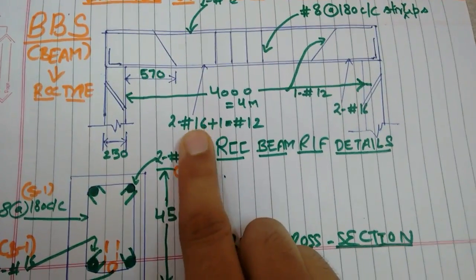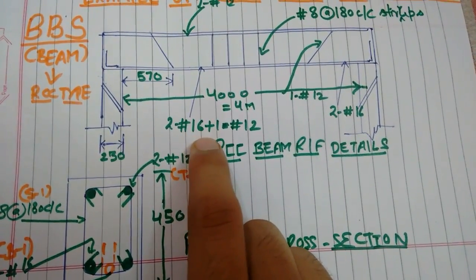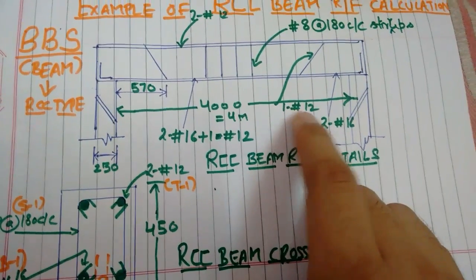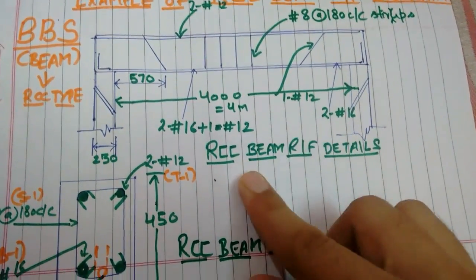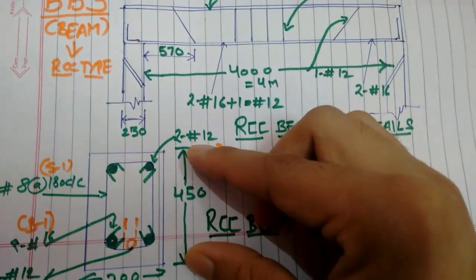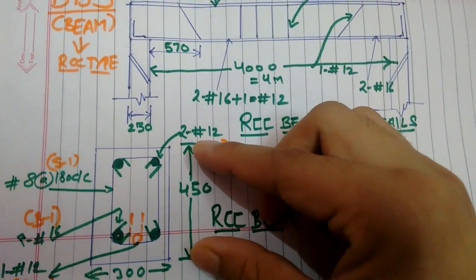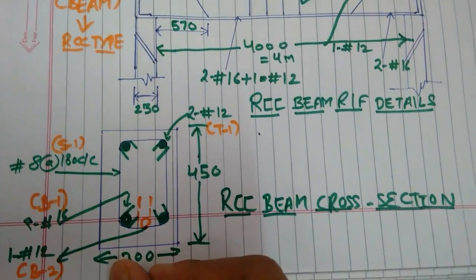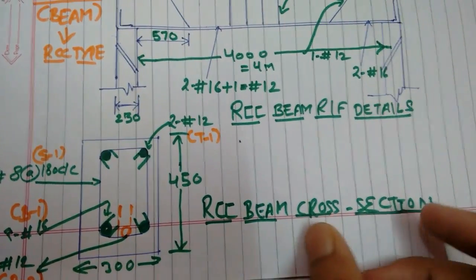This is RCC beam reinforcement details. At the top we are providing two 16mm diameter bars, and at the bottom we are providing one bar of 12mm diameter. You can see the depth of that particular RCC beam is 450mm and the width is 300mm.